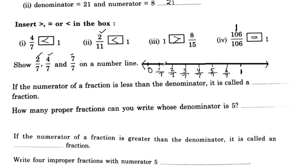We mark 2 by 7, then 4 by 7, and then 7 by 7, which equals 1, on the number line.